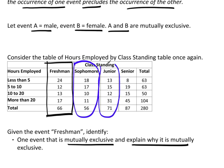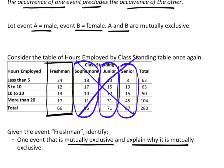Notice that sophomore does not overlap with freshman, so sophomore and freshman are mutually exclusive. So is junior and freshman, and senior and freshman. In a table, all columns will actually be mutually exclusive of each other. I can't be a freshman and a sophomore, a freshman and a junior, or a freshman and a senior. All rows will also be mutually exclusive of each other. The reason these are mutually exclusive is because they do not share any outcomes. If I chose a person randomly and they were a freshman, that immediately eliminates all other class-standing possibilities.